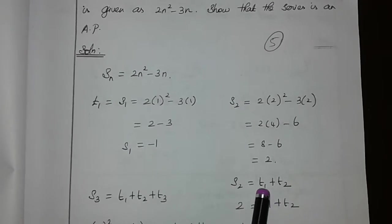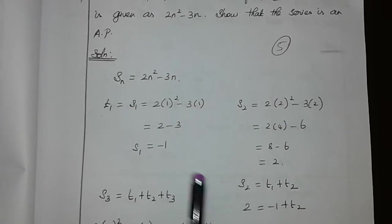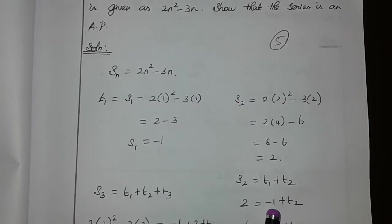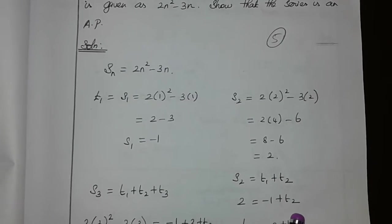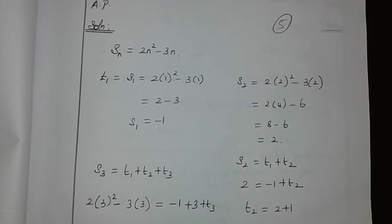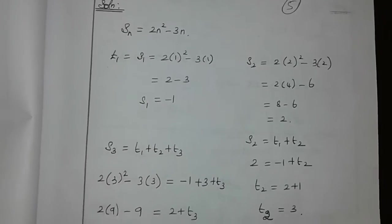S2 is sum of two terms, that is T1 plus T2. I already know T1 is minus 1. So 2 is equal to minus 1 plus T2. T2 is equal to 2 plus 1. Now T2 is nothing but 3.